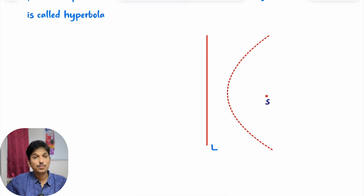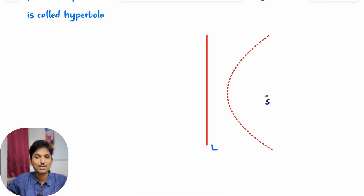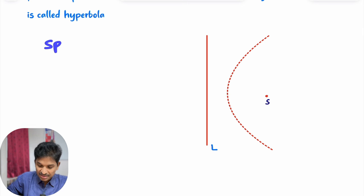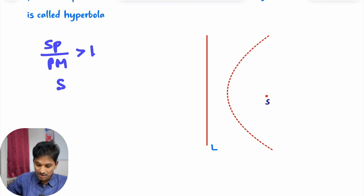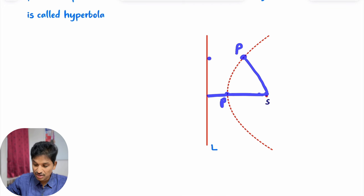You need to consider points satisfying that condition. As you may already know the shape of hyperbola, but here it looks like a parabola. Please watch till the end to understand the definition of hyperbola. What I am saying is SP by PM is constant and that constant is greater than 1. If you cross-multiply, since SP and PM are distances, SP is greater than PM — you can observe this anywhere in the diagram.